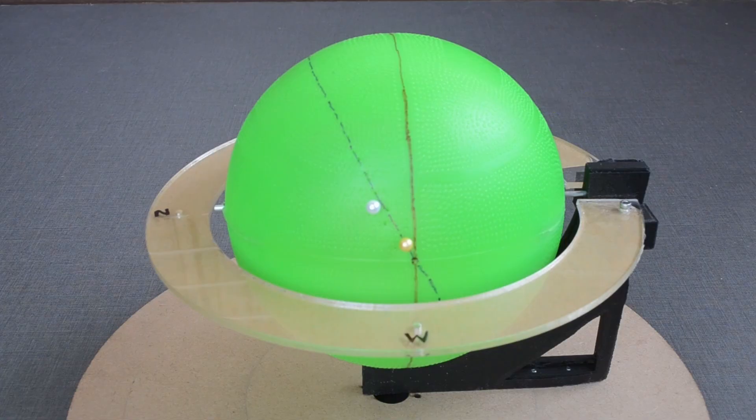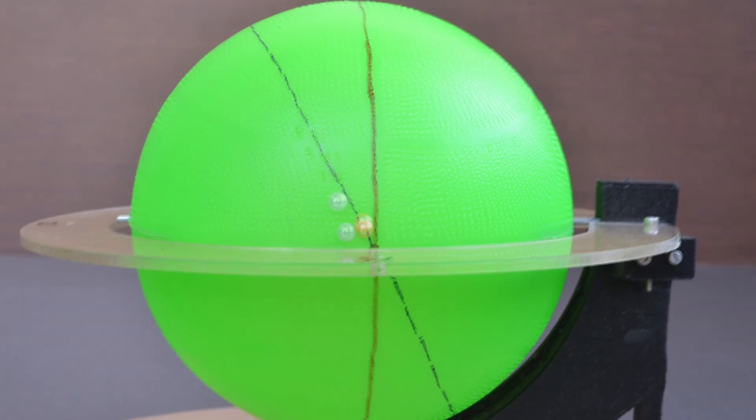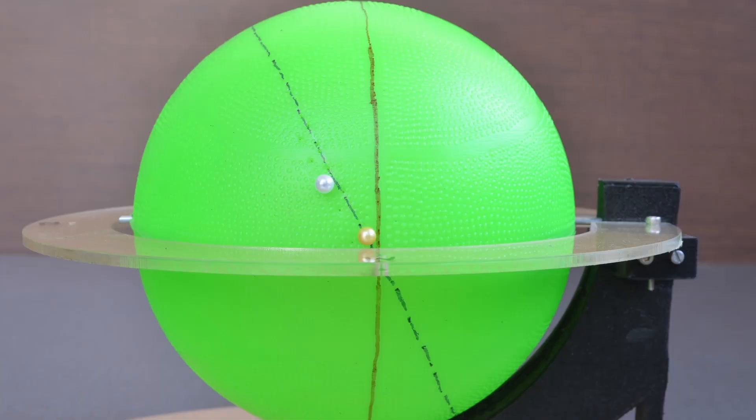During the waning phase, the moon is seen in the east in the mornings. During the waxing phase, it is seen in the evening in the west.